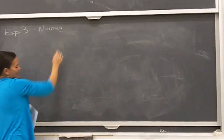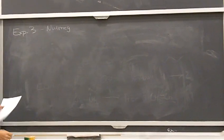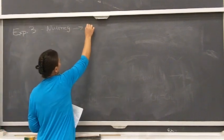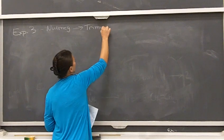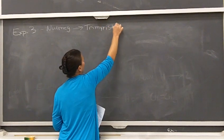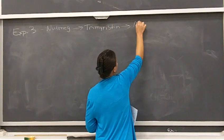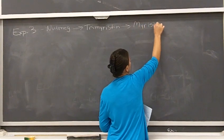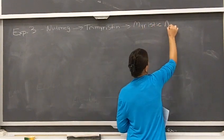Sometimes it doesn't smell as nice in organic lab. We start with nutmeg. We're going to extract out of that trimeristin. We'll talk about trimeristin here in a little bit, and then we use that trimeristin — next week we will form a carboxylic acid with that trimeristin.